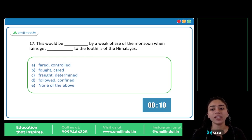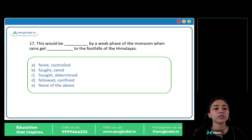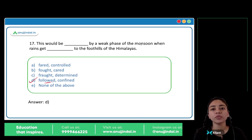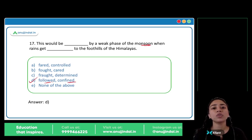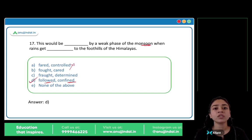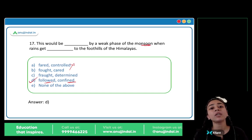This would be blank by a weak phase of the monsoon when rains get blank to the foothills of the Himalayas. The answer is option D: followed and confined. This would be followed by a weak phase of monsoon, and the rains get confined — restricted or limited — to the foothills of the Himalayas. Other options like fared, fought, or fraught do not make sense. So followed and confined is the answer.